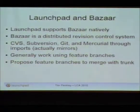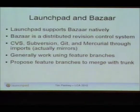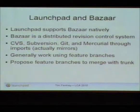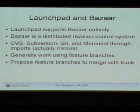We support other revision control systems — CVS, Subversion, Git, and Mercurial — through what we call our code import service, which is more than just an import: it will mirror the foreign branch. So if someone makes extra commits on a Git branch on GitHub, our process will notice that, update it, commit it into the Bazaar revision, and make it available on Launchpad. With a distributed revision control system, the accepted way of doing development is to use feature branches — where every bug fix or feature you're wanting to create, you create in a separate branch and then make available on Launchpad.